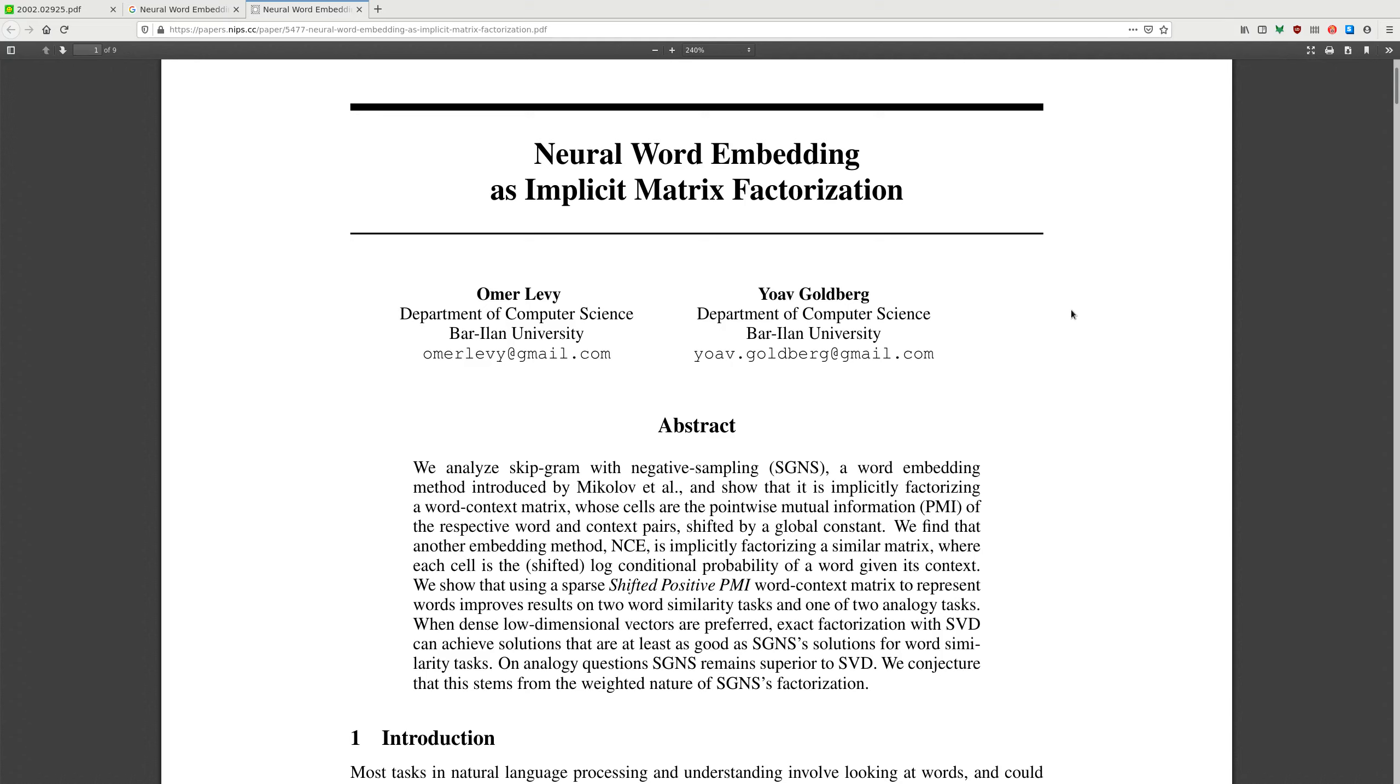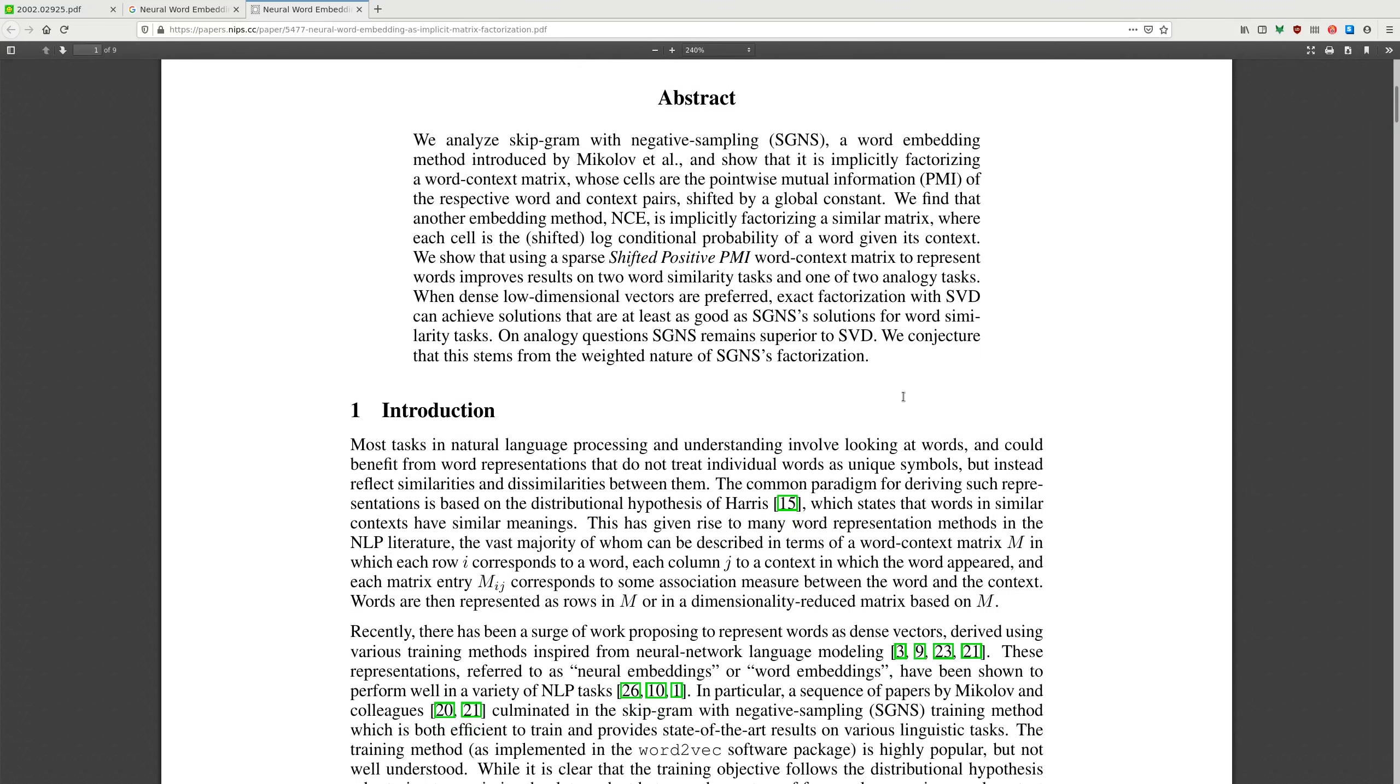When dense low-dimensional vectors are preferred, exact factorization with SVD can achieve solutions that are at least as good as SGNS solutions for word similarity tasks. On analogy questions SGNS remains superior to SVD.